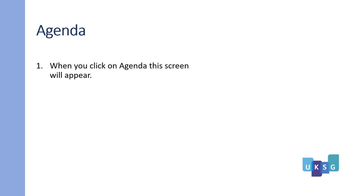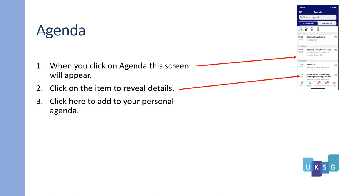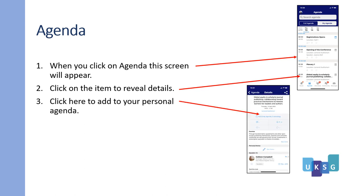Let's look at the agenda. When you click on agenda this screen will appear. Click on the item to reveal details of the session. Click here to add your personal agenda. Now you can view your personal agenda.